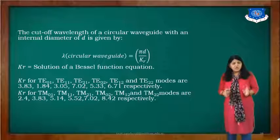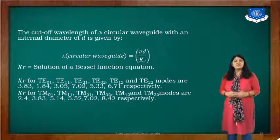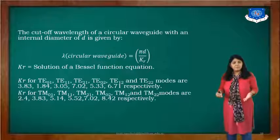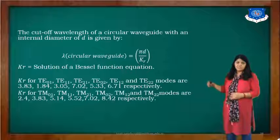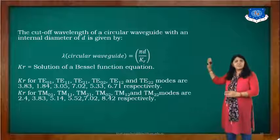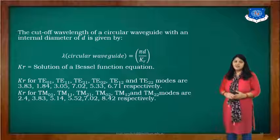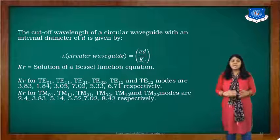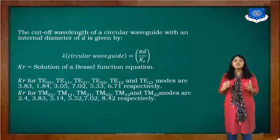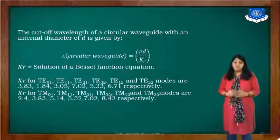The cutoff wavelength of a circular waveguide with an internal diameter d is given by another equation: lambda c equals pi·d divided by kr, where kr is a solution of Bessel's function equations.